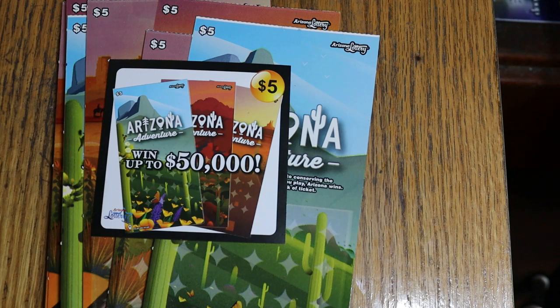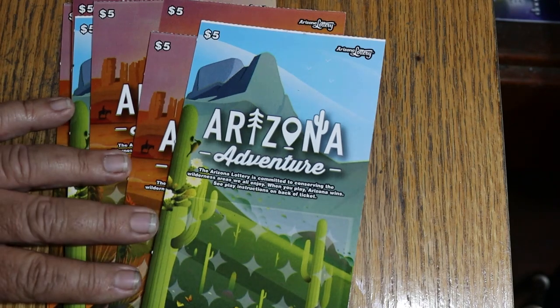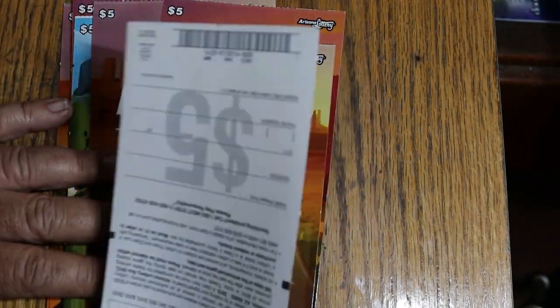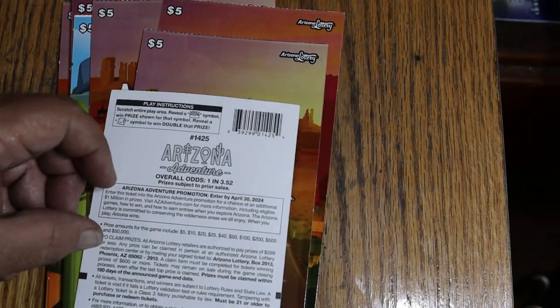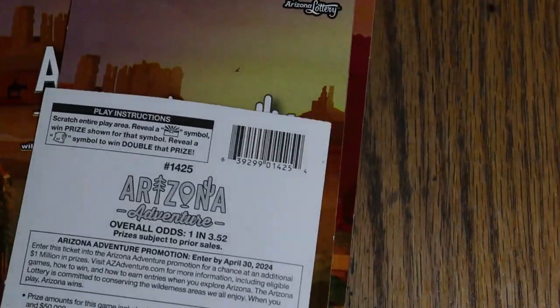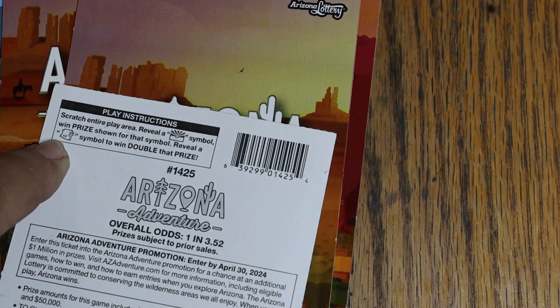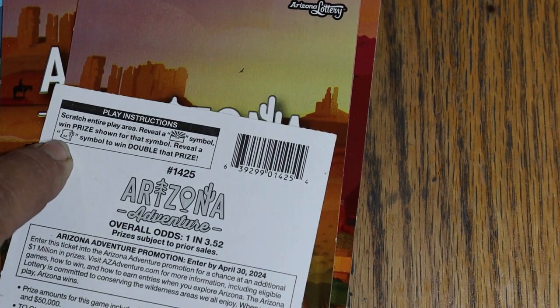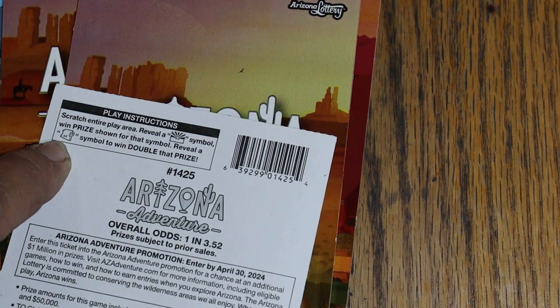This is a rather simple ticket. It is a symbol hunt. No numbers to match. No bonuses. So basically, what we're doing here is looking for, reveal an Arizona flag, win the prize. Reveal the state symbol, outline of the state with a cactus, and you get double the prize. And that's it. That's all there is to this thing.